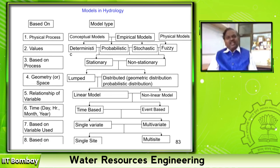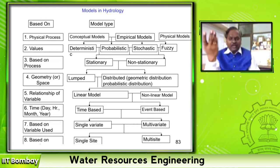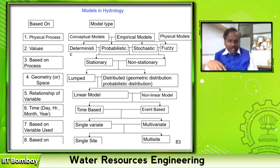Here is a complete picture of types of models used in hydrology. Based on physical process, models can be empirical, physical, conceptual, or data-based. Depending on the type of input values, a model may be deterministic, probabilistic, stochastic, or fuzzy. If the statistical characteristics (mean, standard deviation, skewness, kurtosis) of the data do not vary over time, it is a stationary time series; if they vary, it is non-stationary.